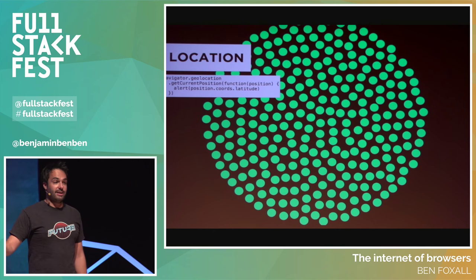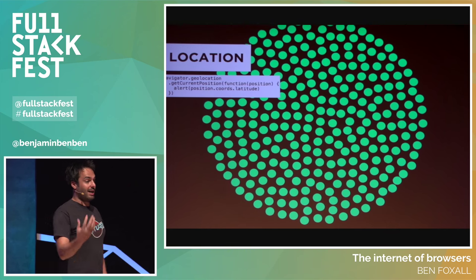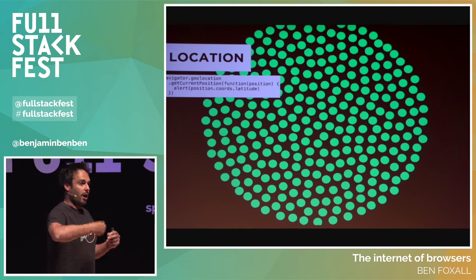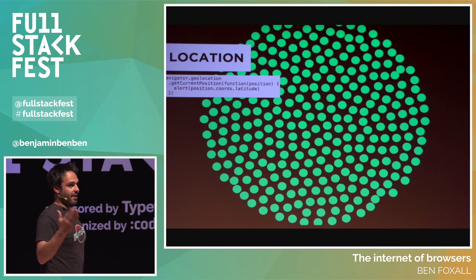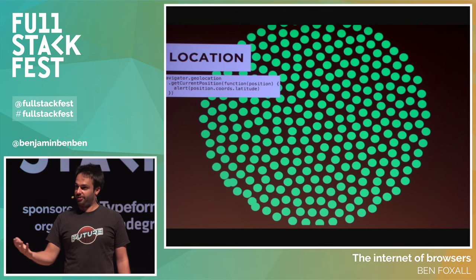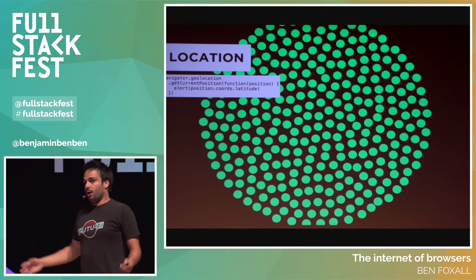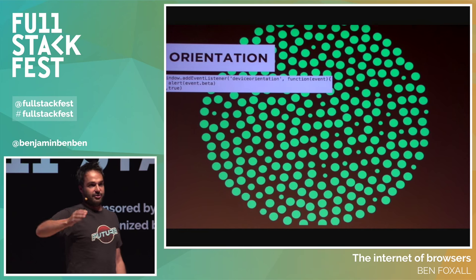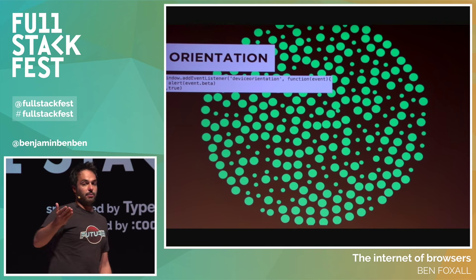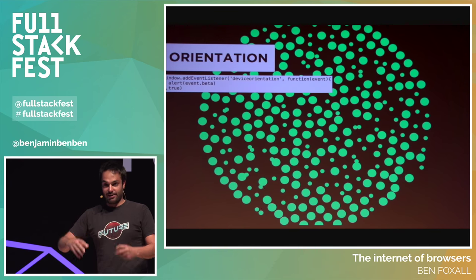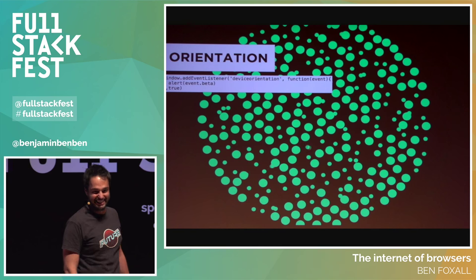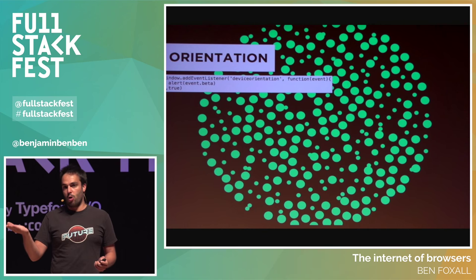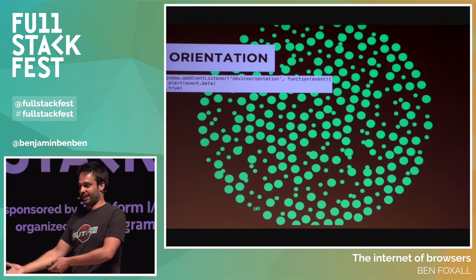Every one of our devices supports geolocation through the web API — you can pull out latitude, longitude, and precision, and get updates periodically as you move around. So we can find out where our device is within the world, which is huge. Our devices also have a position: we can read the orientation of our devices — which way they're actually facing in their environment. We can find out what orientation the device has relative to the centre of the world.